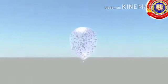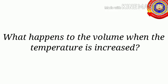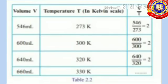Now see the change. What happened to the volume of the balloon when the sun sets? As the sun sets, the temperature decreases, causing the volume of the balloon to decrease. So in both cases, the volume increases when the temperature is increased. Now observe the table which shows the relation between volume and temperature of a definite mass of a gas.